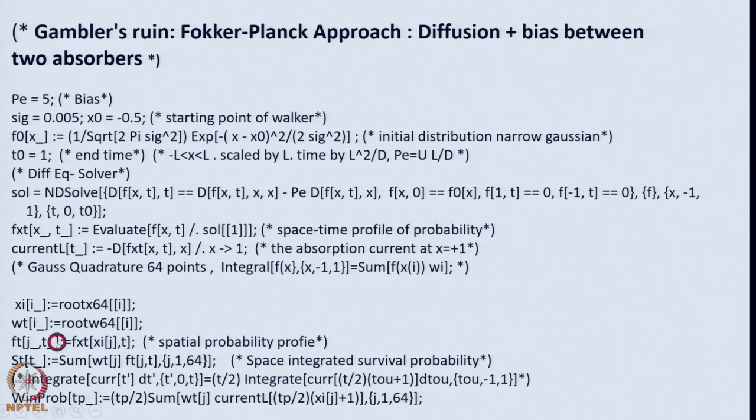Our matter of interest is the probability of contacting the upper point 1 because 1 is the winning surface. It has to obtain that current which by Fick's law is minus d f by d x. It evaluates d f by d x at x equal to 1, that is absorption current probability of arrival at 1 per unit time, also known as the first passage time distribution function. I did not use the Mathematica command for further integrating, it was very time consuming. It was much easier to use Gauss quadrature.